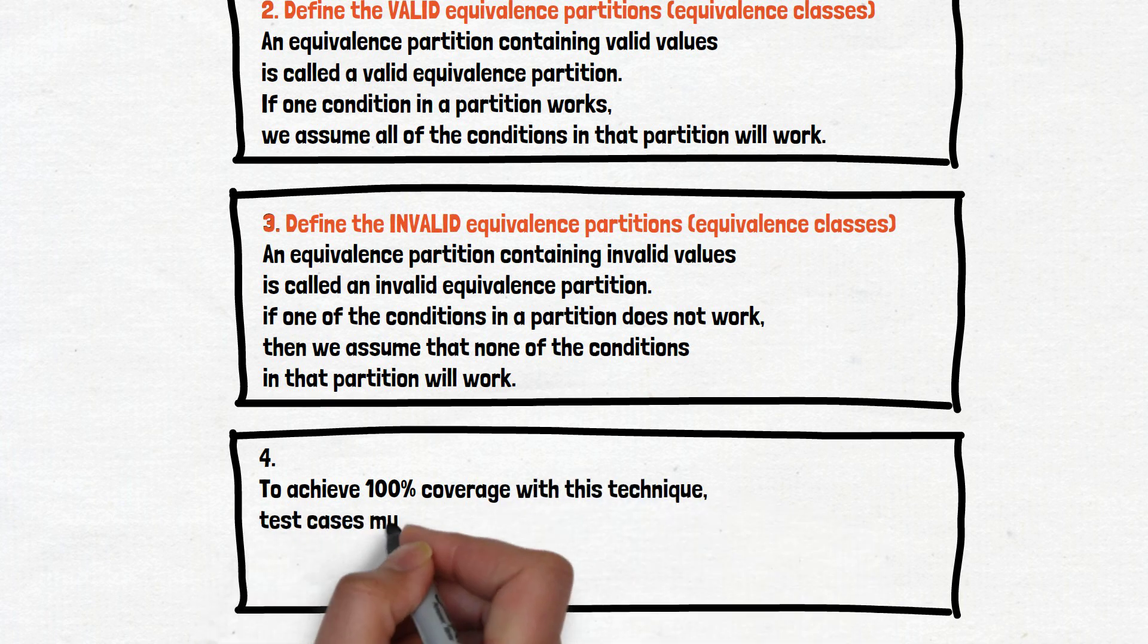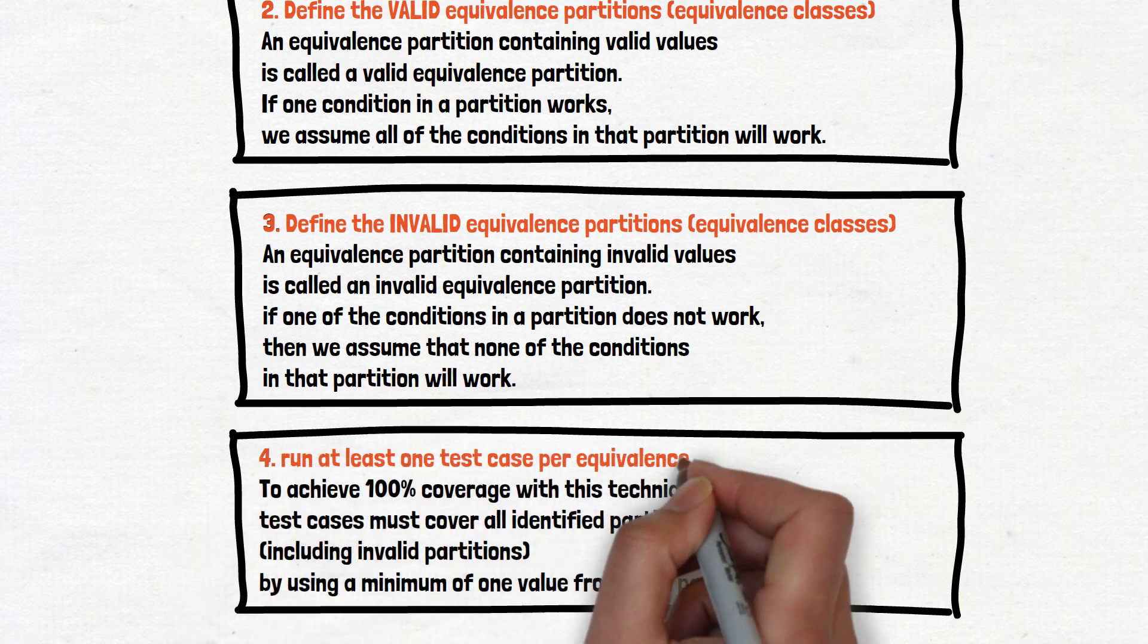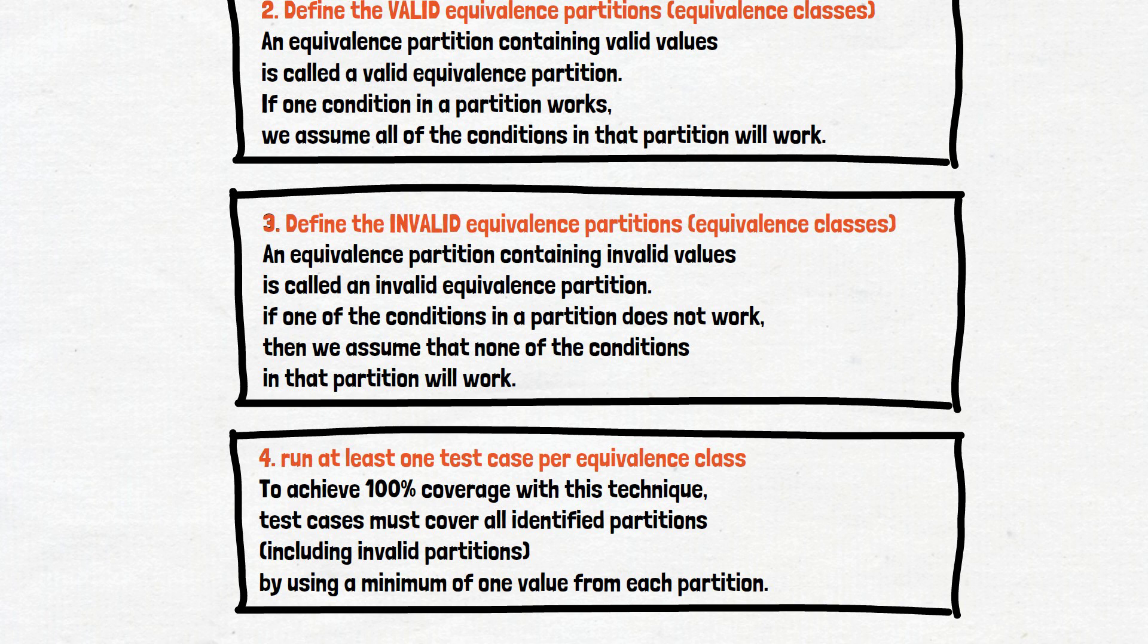It sounds like this. To achieve 100% coverage for this technique, test cases must cover all identified partitions, including invalid partitions, by using a minimum of one value from each partition. Again, you can stop the video and read it one more time. But in simple words, it means that we need to run at least one test case per equivalence class.